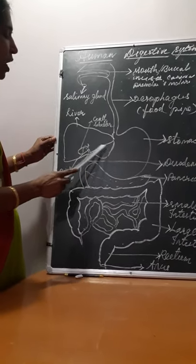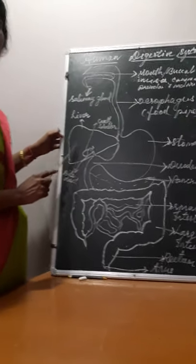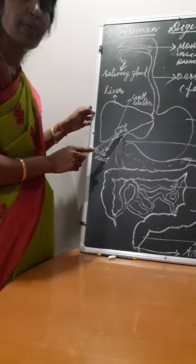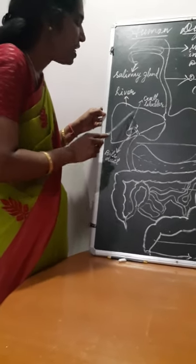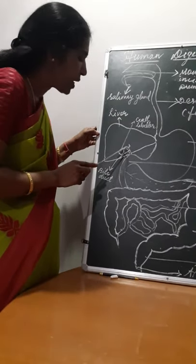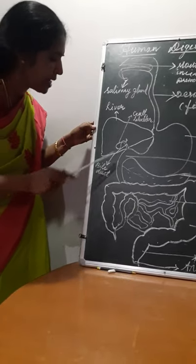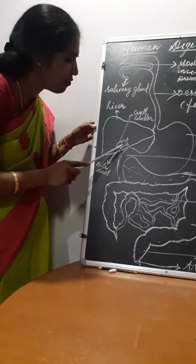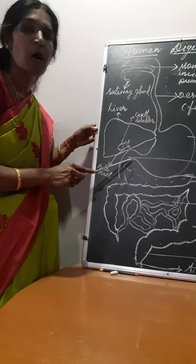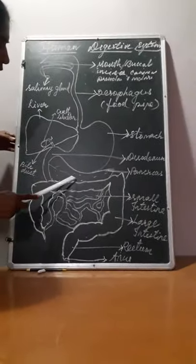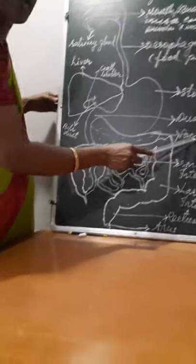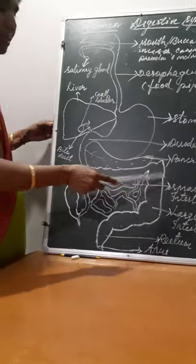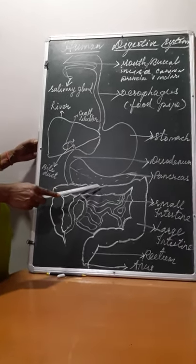In the upper abdomen, you can find the liver — the largest gland in the human body. It has a gallbladder and it secretes bile. The liver secretes bile, which is temporarily stored in the gallbladder. The bile duct connects the gallbladder to the duodenum, which is the first part of the small intestine, carrying bile juice from the gallbladder to the small intestine. Below the stomach, you can find a small pinkish gland known as the pancreas. I will discuss the digestive glands, hormones, and enzymes secreted later.